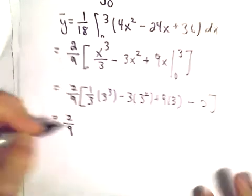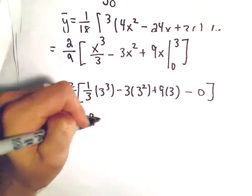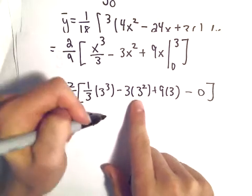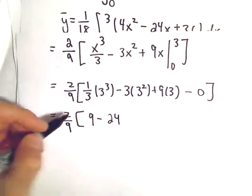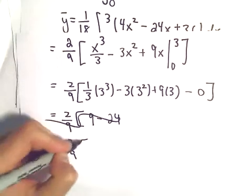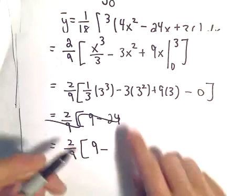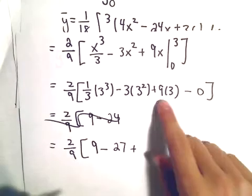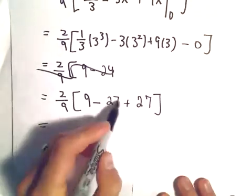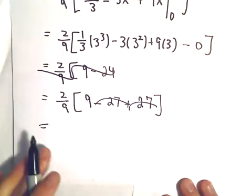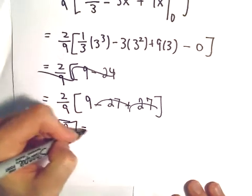So 3³ is 27, divided by 3 is 9. Then 3² is 9 times 3 is 27, plus 9 times 3, which is 27. So we have 9 - 27 + 27. The -27 and +27 cancel out, leaving us with 2/9 times 9, which gives us 2. That's our value for y-bar.